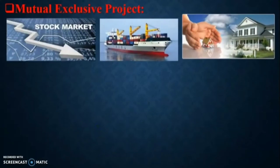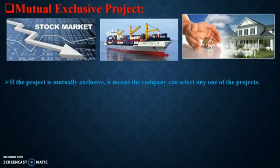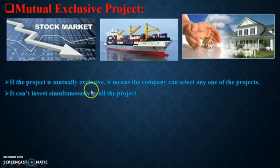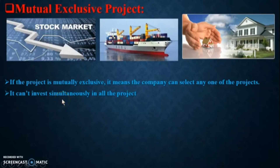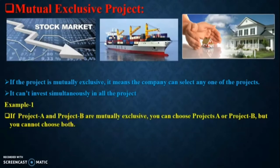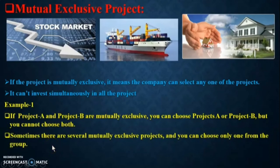Next, mutually exclusive projects. These projects differ from independent projects. If a project is mutually exclusive, it means the company can select only one of the projects — it cannot invest simultaneously in all projects. For example, if Project A and B are mutually exclusive, you can choose Project A or B, but you cannot choose both. Sometimes there are several mutually exclusive projects and you can choose only one from the group.